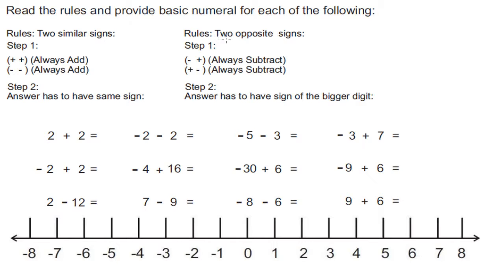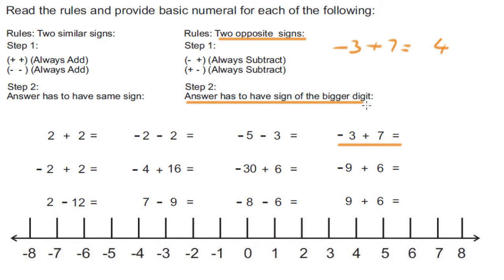Rule two: two opposite signs. For example, negative three plus seven. Two opposite signs always subtract. So seven minus three is equal to four. Step number two: the answer has to have the sign of the bigger digit. Seven is the bigger digit, so the answer has to be positive. Let's use the number line — we go three steps in the negative direction.